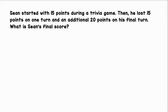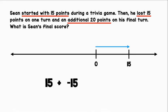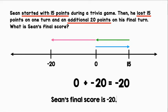Sean started with 15 points during a trivia game. Then, he lost 15 points on one turn and an additional 20 points on his final turn. What is Sean's final score? Let's use a horizontal number line to represent this situation. He started with 15 points. We can represent that with a positive 15. He then lost 15 points. So, we can add negative 15. And, he lost an additional 20 points. So, let's add negative 20. That will give us his final score. Let's start with 15 plus negative 15. We'll find the difference of the absolute values. 15 minus 15 is 0. Then, we'll add 0 to negative 20. That gives us negative 20. Sean's final score is negative 20.